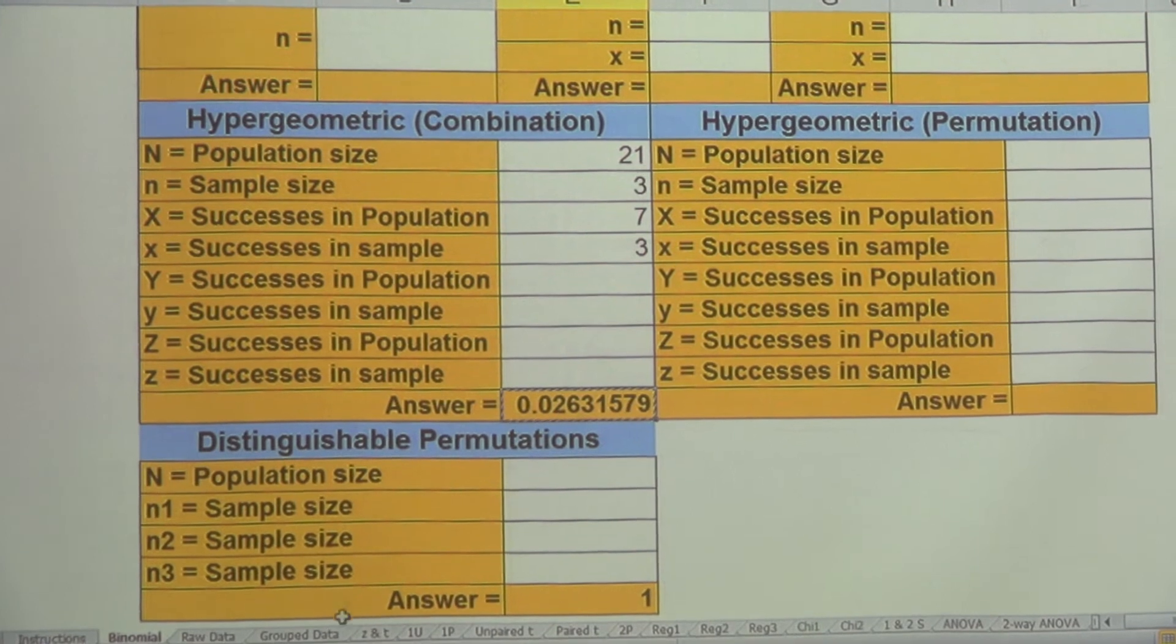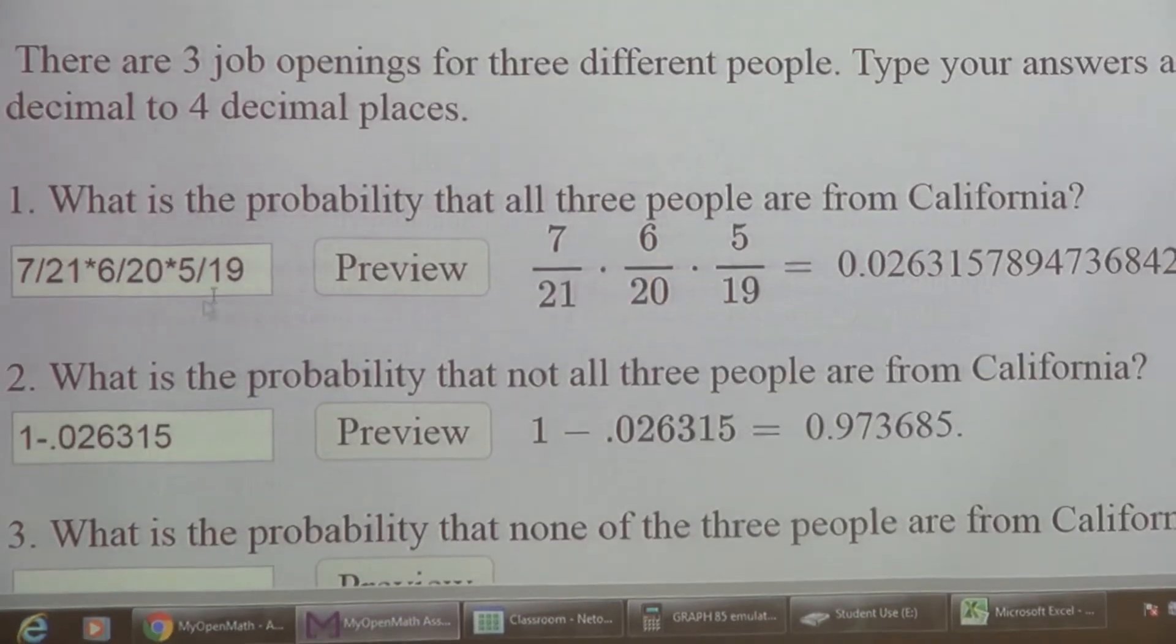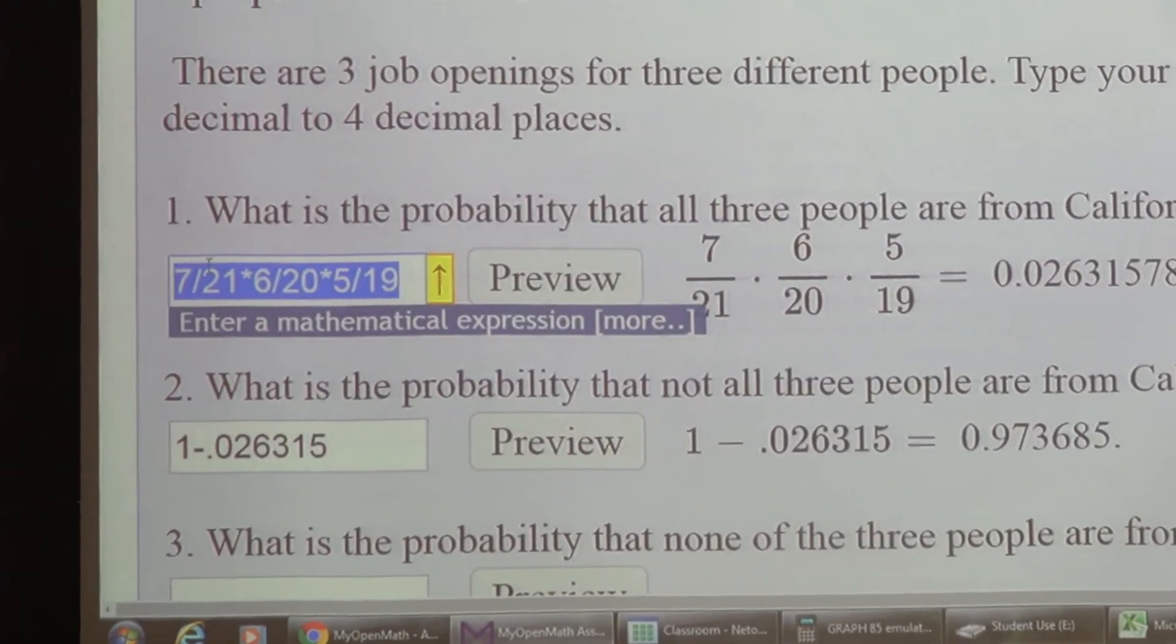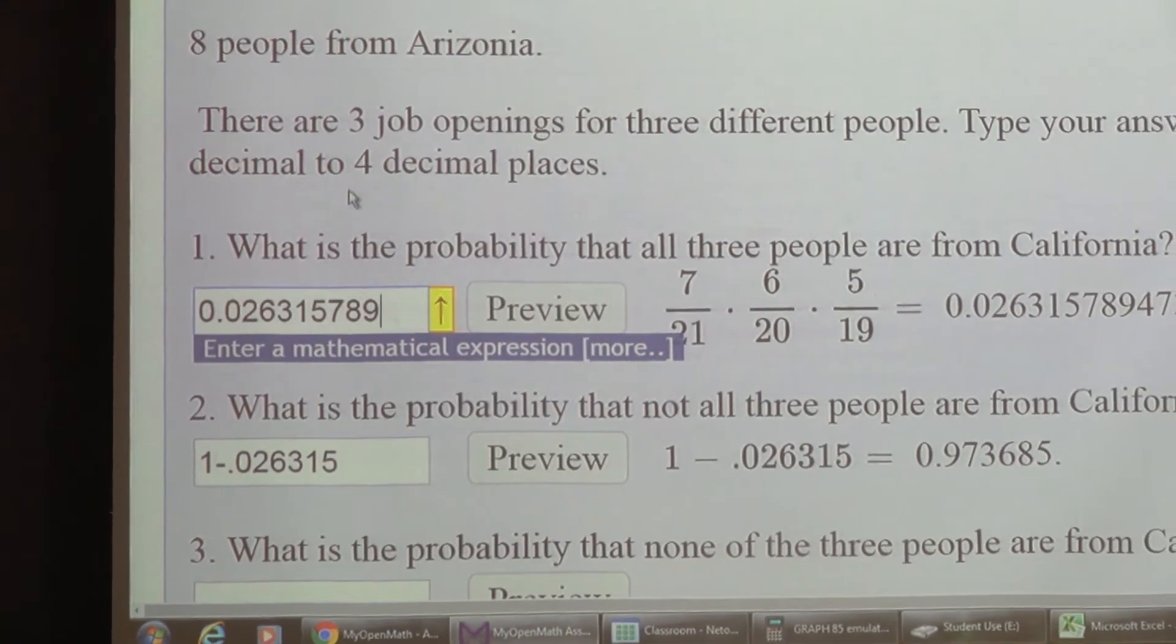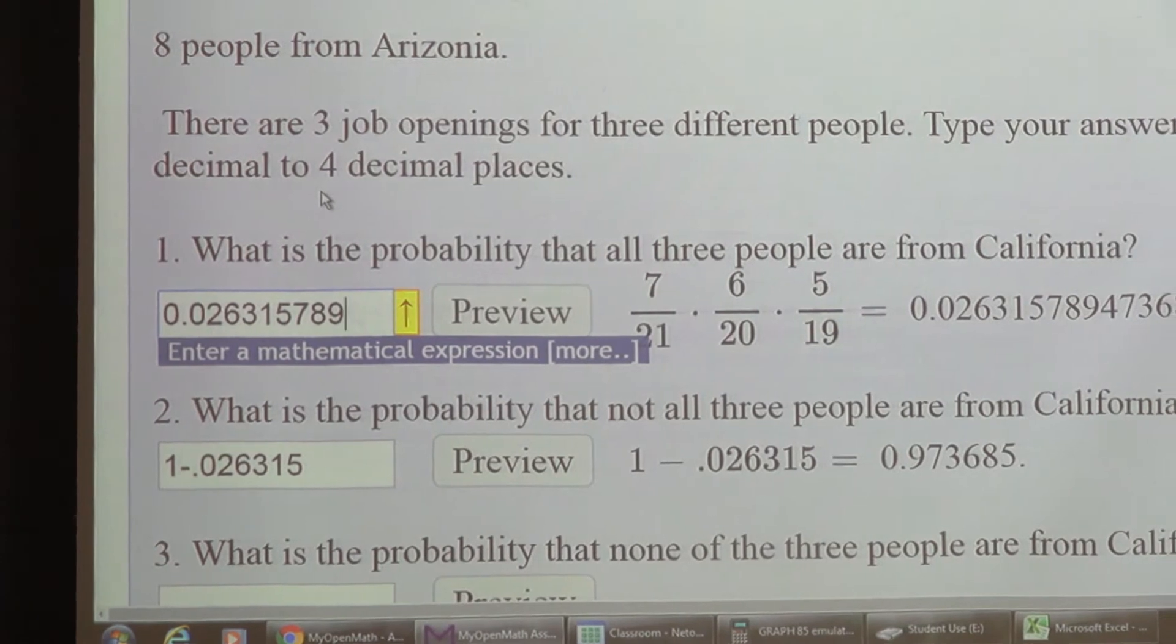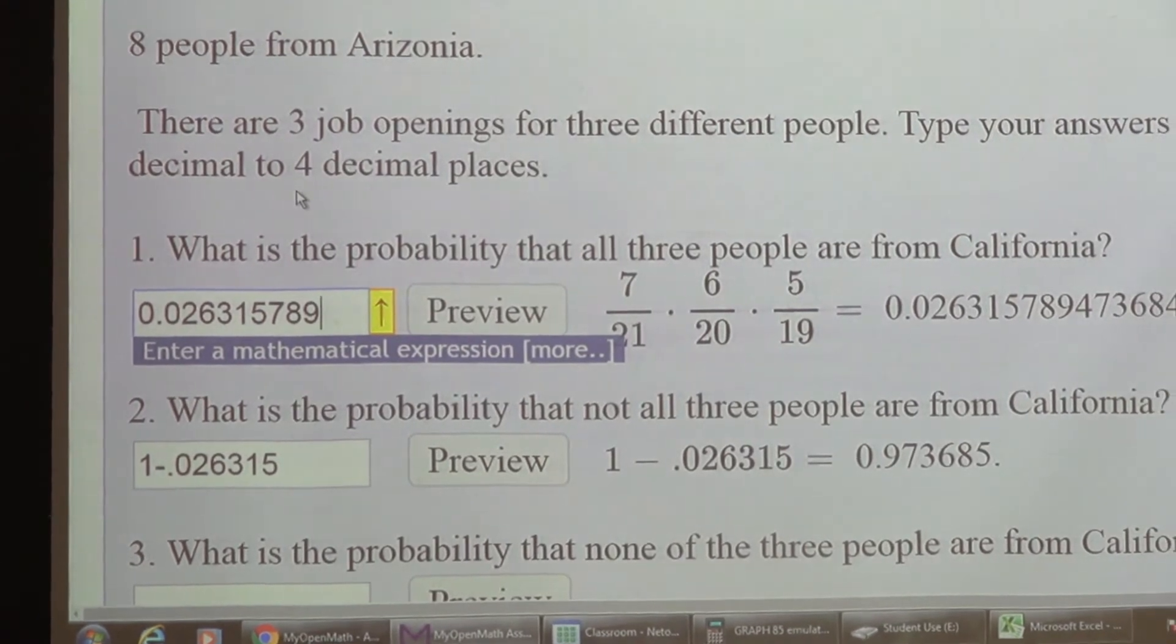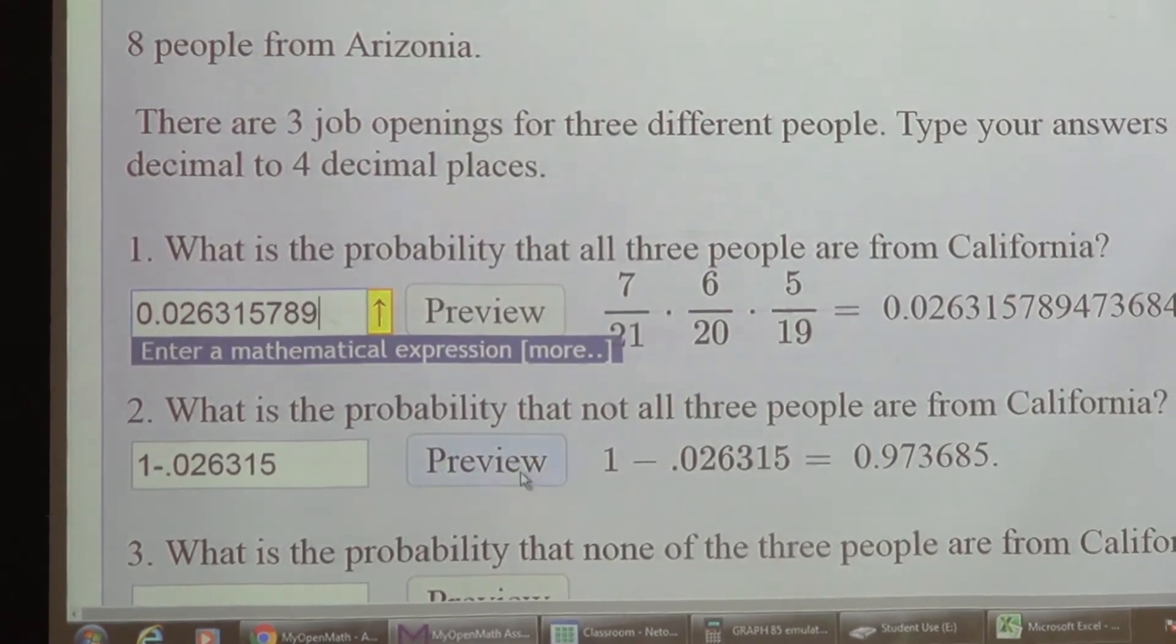When you copy something here, then you can just go to the Excel, go to the cell that you want to put your answer in, and just paste it in. If it says four decimal places, as long as you have at least four is all you need. You can have more than that.